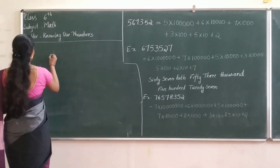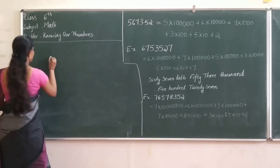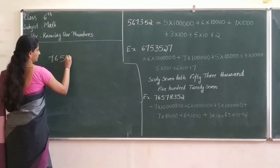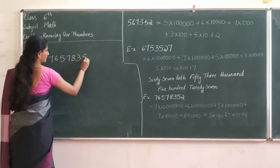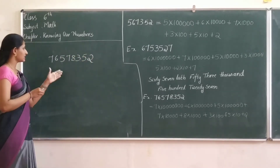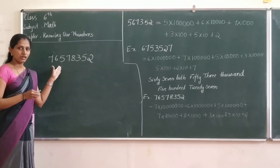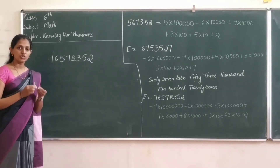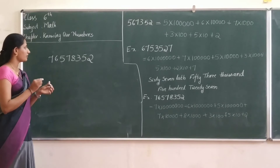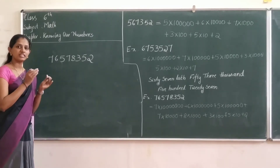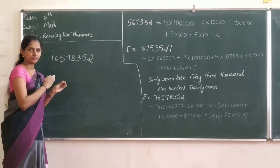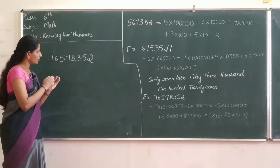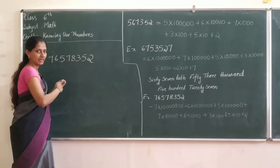So, I will write this example only. This one is an 8-digit number — it is difficult to write the number name, correct? So we have to use a comma. First, we have to put a comma after 3 digits from the right side — we have to put the first comma after 3 digits from the right side.